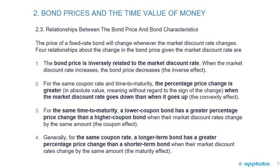Number three: for the same time to maturity, a lower coupon bond has a greater percentage price change than a higher coupon bond when the market discount rate changes by the same amount — that's the coupon effect. Number four: generally, for the same coupon rate, the longer-term bond has a greater percentage price change than a shorter-term bond when their market discount rates change by the same amount — that's the maturity effect.